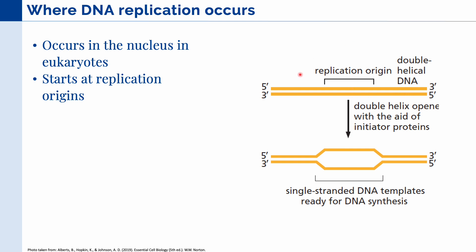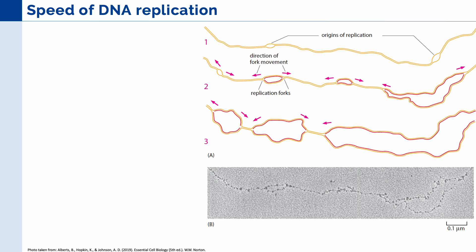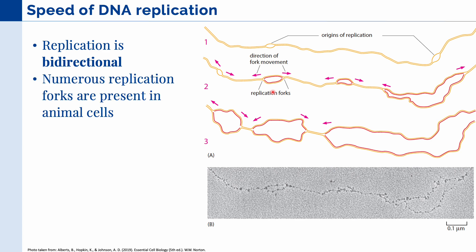Once the origin of replication has been opened up, it creates two replication forks. The cell is very efficient in its DNA replication because of two things. First, replication is bidirectional — once a replication fork opens, replication occurs in two opposing directions. Second, there are numerous replication forks present in animal cells, and these continue to create new DNA and meet together. In humans, there are around 10,000 of these different replication forks that can occur at the same time.